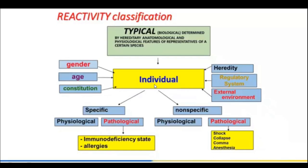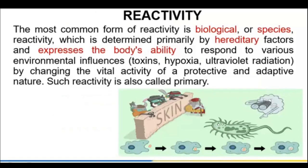Individual reactivity may be specific and nonspecific, and specific may be physiological or pathological. Pathological specific examples include immunodeficiency states and allergies. Nonspecific reactivity may also be physiological or pathological. Pathological nonspecific examples include shock, collapse, and coma.